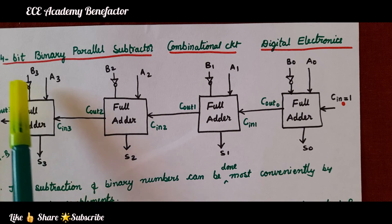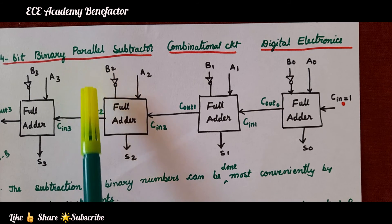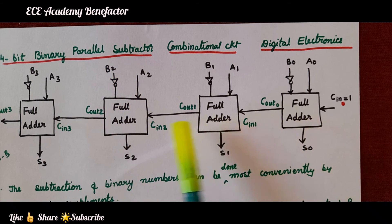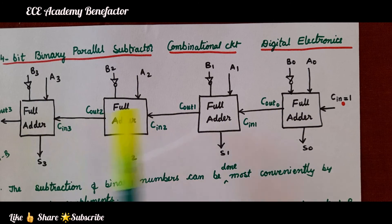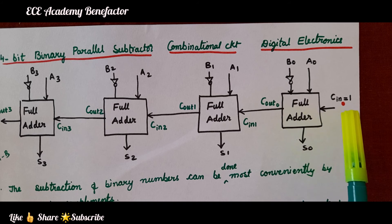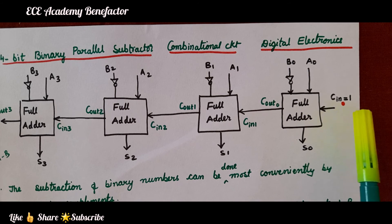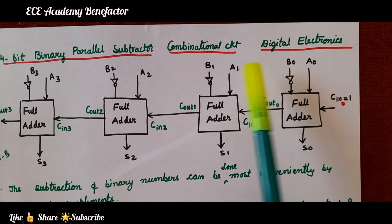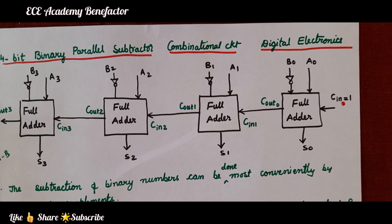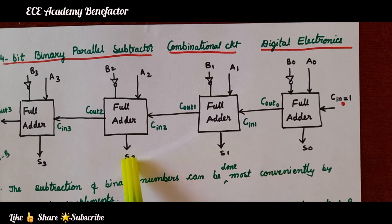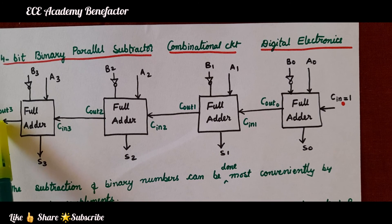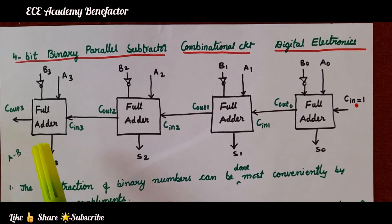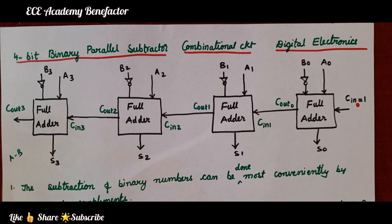For the implementation of a 4-bit binary parallel subtractor, we need four full adders. Initially, the carry-in value must be set to 1 and all the B bits are to be connected to NOT gates. We get outputs S0, S1, S2, S3 with carry bit C-out 3.